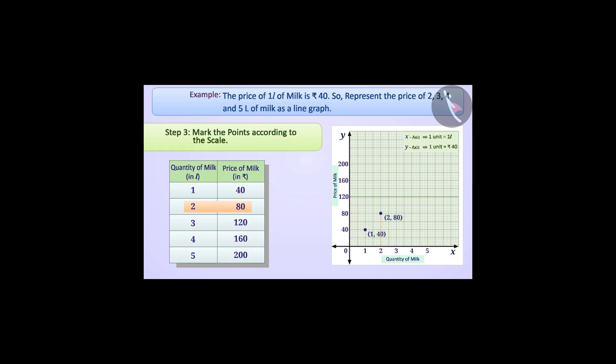Similarly, we mark the coordinates (3, 120), (4, 160), and (5, 200). After this, we join all the points with line segments. We have represented the price and quantity of milk in the form of a graph.